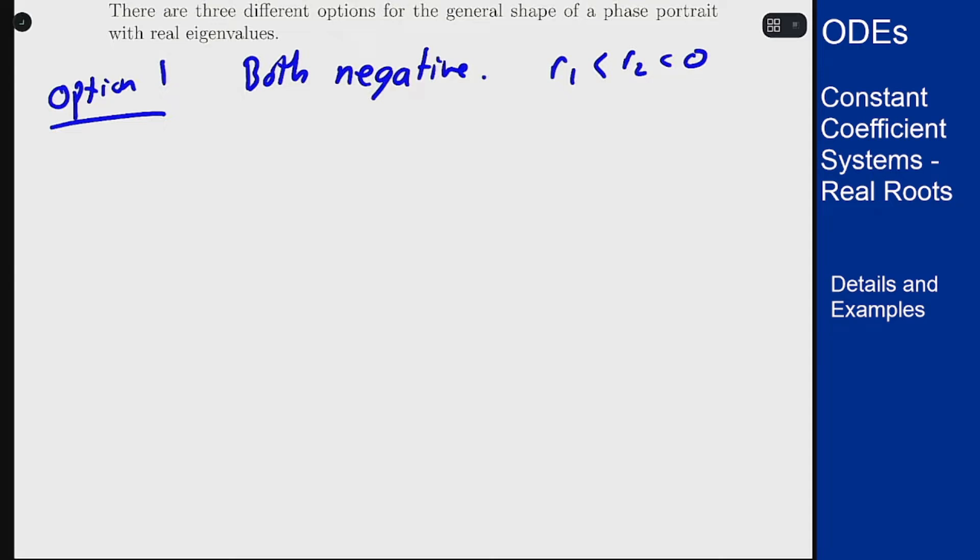In this case a general solution might look something like c1 times [1, -1] e to the r1t plus c2 [1, 1] e to the r2t. I'm picking [1, -1] and [1, 1] for my eigenvectors here. In an actual problem you'll want to put the correct ones in when you solve this out.